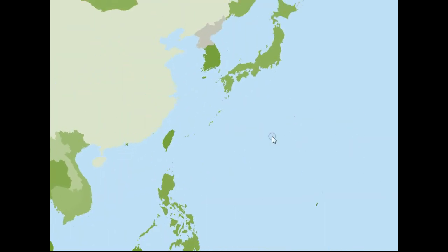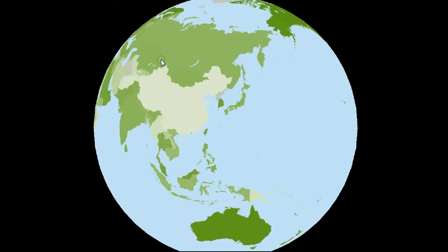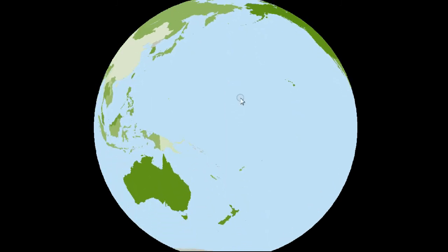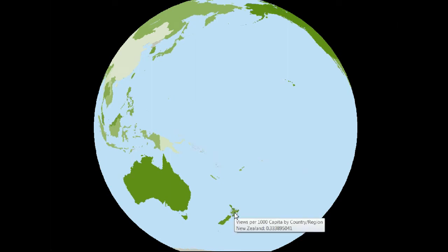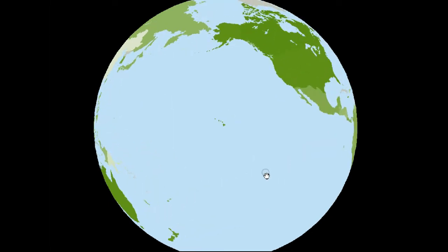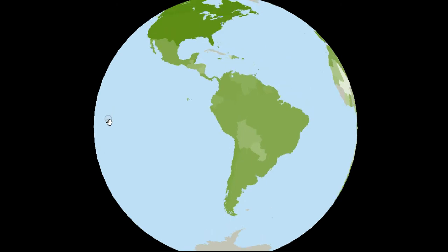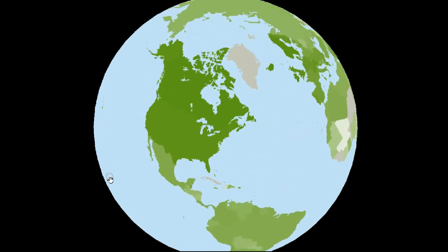Let's zoom all the way out — we've pretty much gone around the world. New Zealand is probably about the same as Australia. Let's check: New Zealand is 0.33 views per 1,000, while Australia is 0.55 views per 1,000. We took a look at South America before.